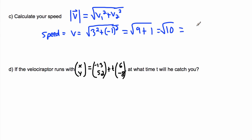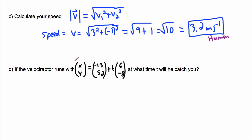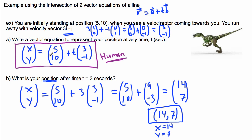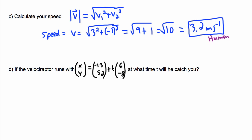Now the velociraptor runs with its own vector equation of a line — same velociraptor with the same velocity vector from the previous example. The question is: at what time t will it catch you? When the velociraptor catches us, we'll be at the same position. So we set both XY position vectors equal to each other — that's the key to solving this.